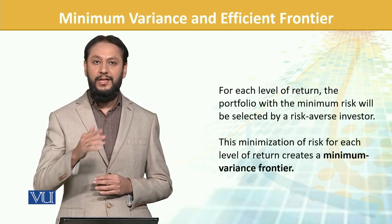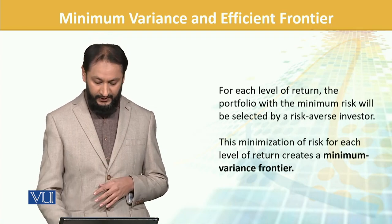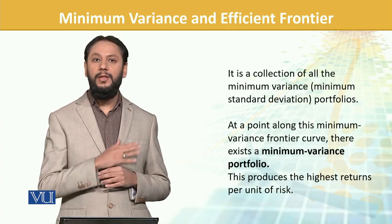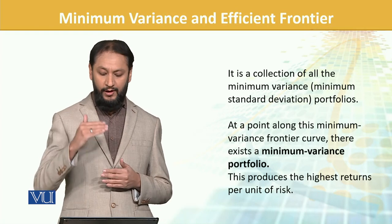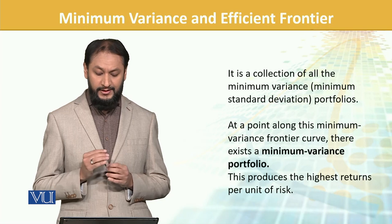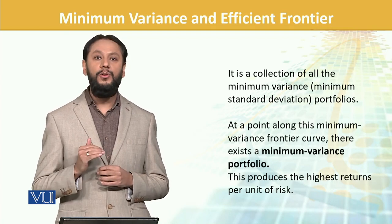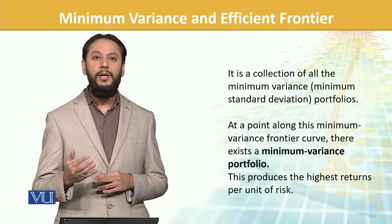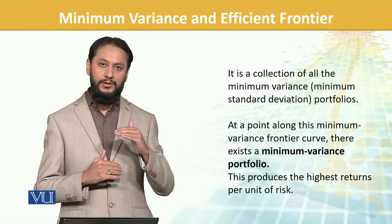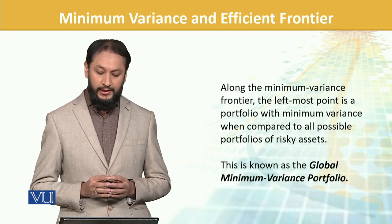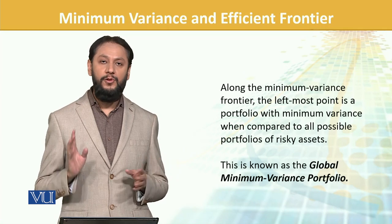This minimization of risk for each level of return creates the minimum variance frontier. It is the collection of all minimum variance portfolios — for any given return, it gives the minimum variance. Along the minimum variance frontier, there exists a minimum variance portfolio which represents the highest return per unit of risk. The left-most point along the minimum variance frontier is the portfolio with minimum variance when compared to all possible risky assets.